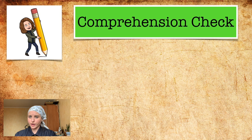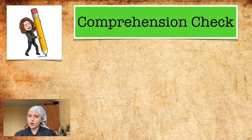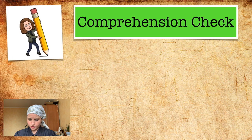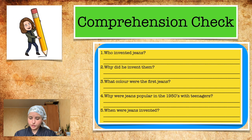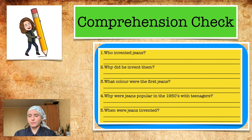Now we're going to check your reading comprehension. Please find the answers to these questions — they're also on the worksheet you're doing today, so you can use that instead of your notebook. The questions are: Who invented jeans? Why did he invent them? What color were the first jeans? Why were jeans popular in the 1950s with teenagers? And when were jeans invented? Those are the questions you need to answer on your worksheet today.